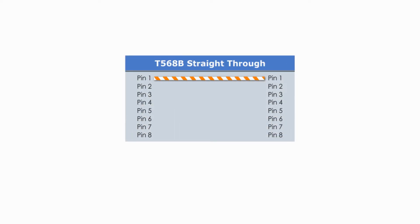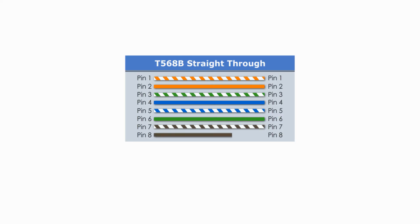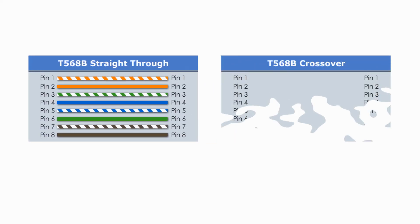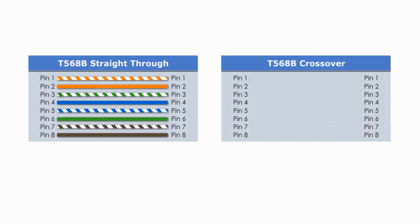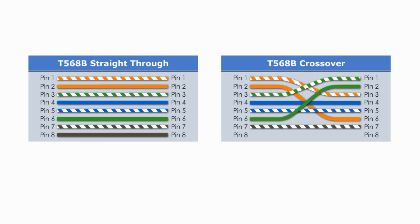Type B straight-through cable has type B RJ45 connectors at both ends. Type B crossover is actually the same as type A crossover.